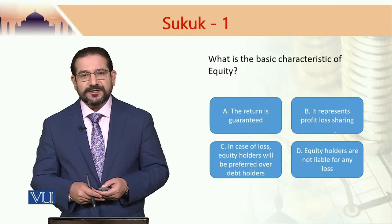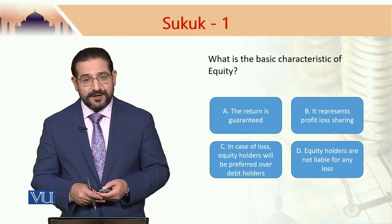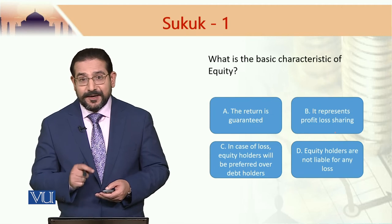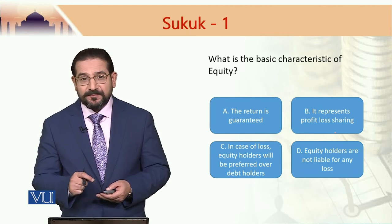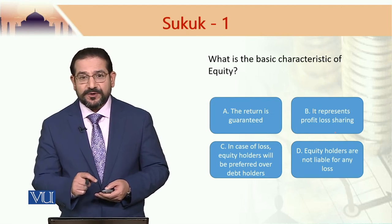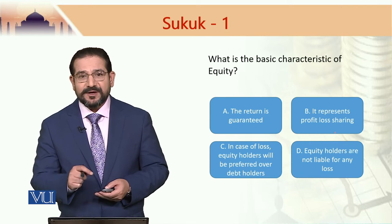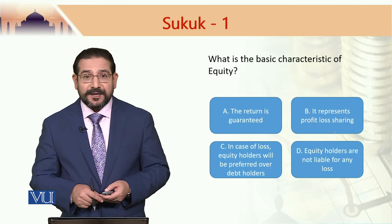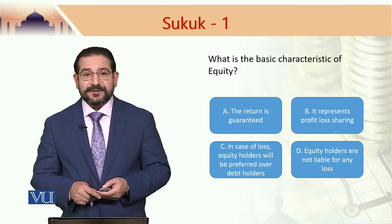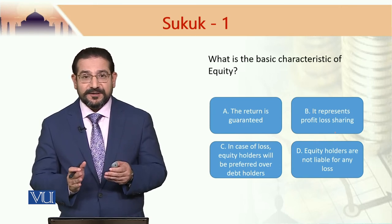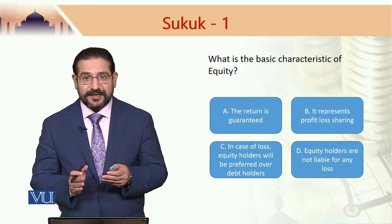In case of C — that equity holders will be preferred over debt holders in case of loss — this is not the case either, because debt holders are preferred over equity holders in the event of bankruptcy. This means that if a company is liquidated, the assets are first used to pay debt holders.